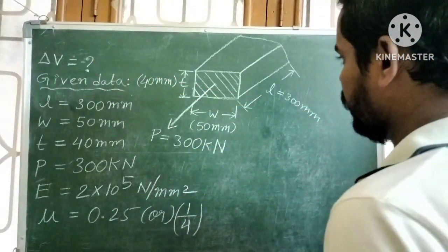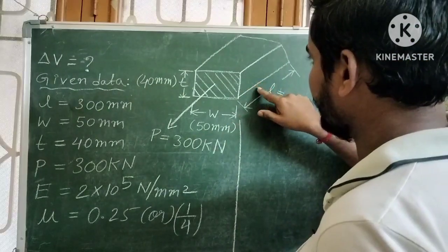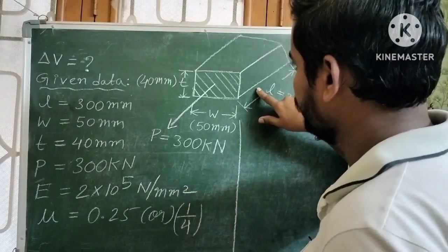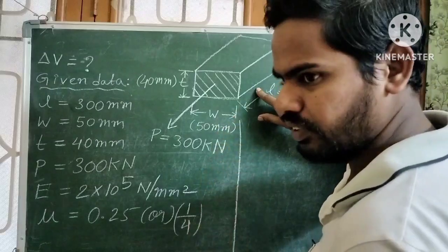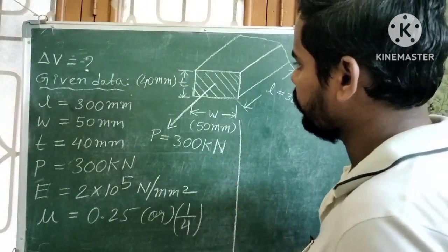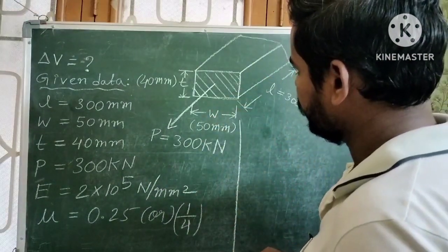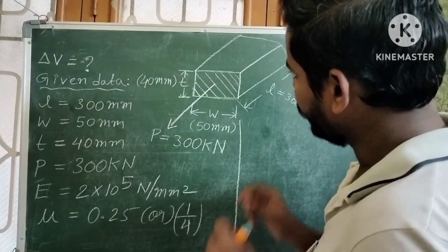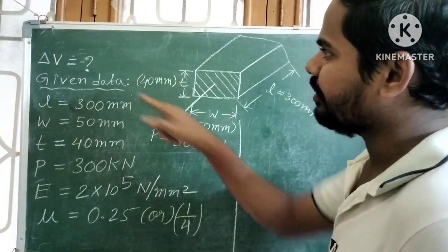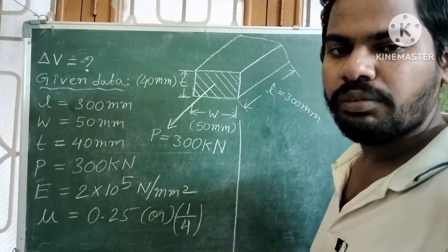The basic idea is that the rectangular bar is subjected to axial pull along its length, i.e., the longitudinal direction. We apply an axial pull of 300 kilo Newton. Due to this axial pull, there will be change in length and change in volume. Here we need to find the change in volume.